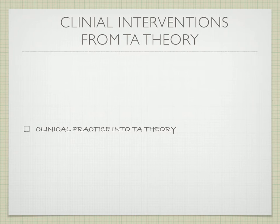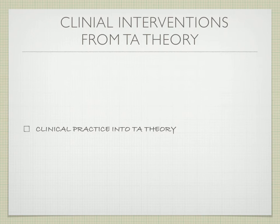Clinical Interventions from TA Theory involves showing that you can talk about at least two TA interventions clinically. This will be done at the end of the 20 minutes — after the clinical practice has happened, the evaluator will talk about what interventions you did and discuss them in TA theoretical terms. For example, what injunctions were you working with, what drivers, or what script change were you witnessing? The evaluator needs to understand that you can talk TA Theory to at least two positions.